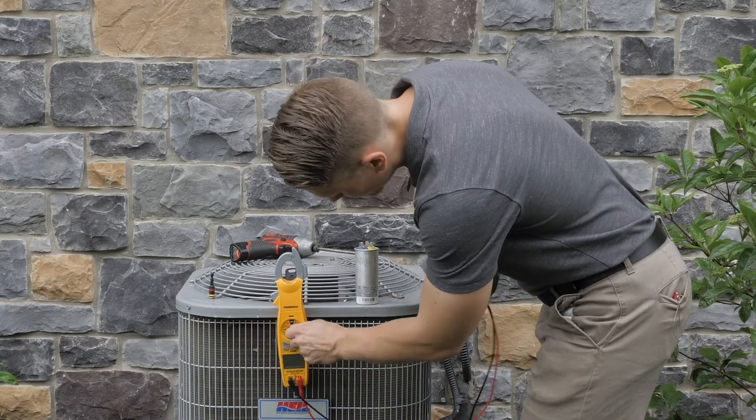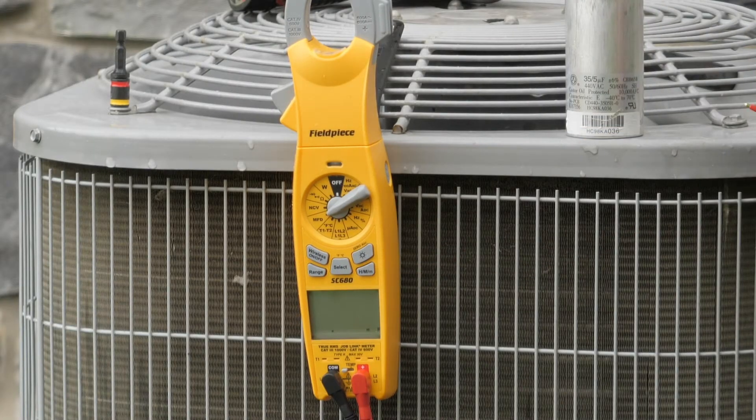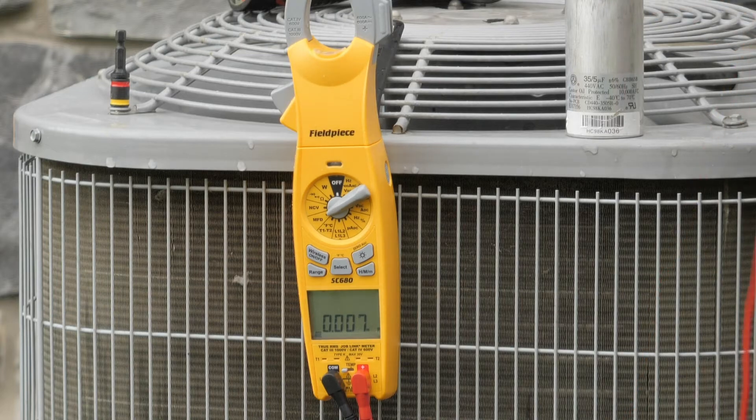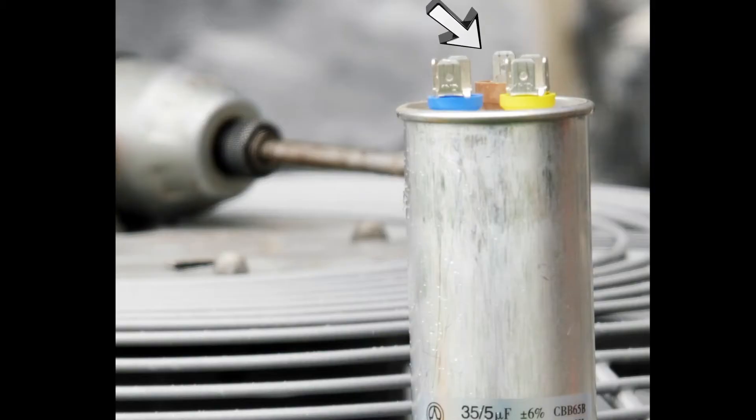Pull out your multimeter and set it to MFD for microfarad or UF for microfarad. You're going to have three terminals on the top of the capacitor: C, F, and H. These stand for C is common, F is fan, and H is Herm, which is the compressor.